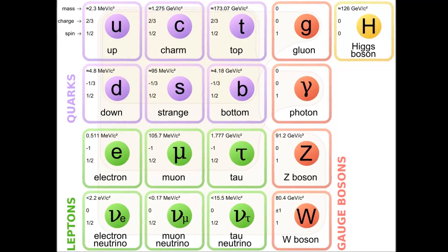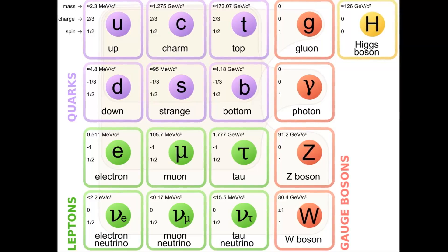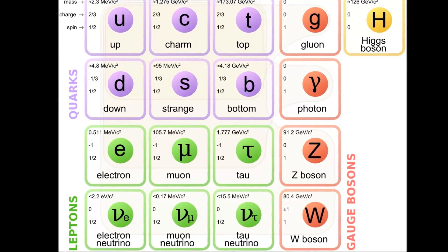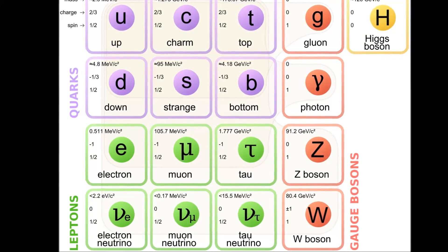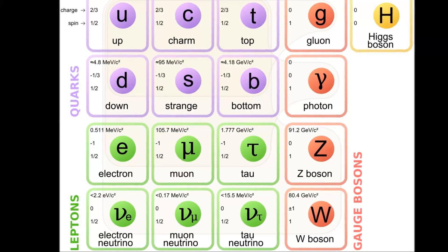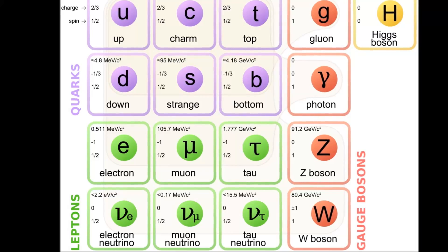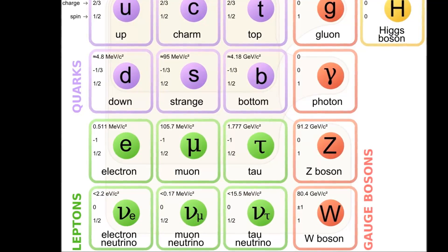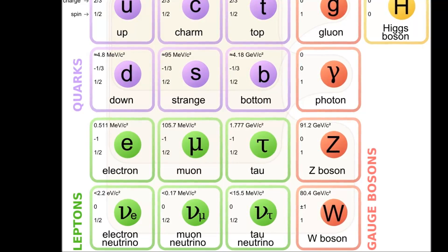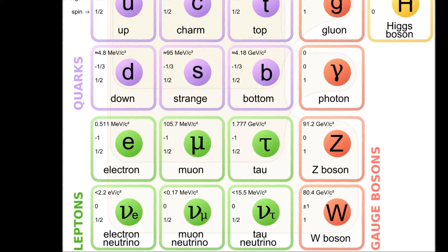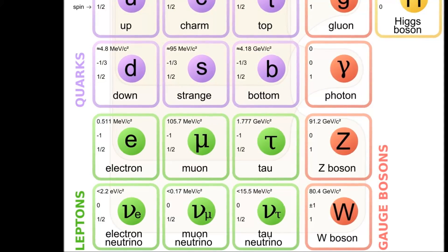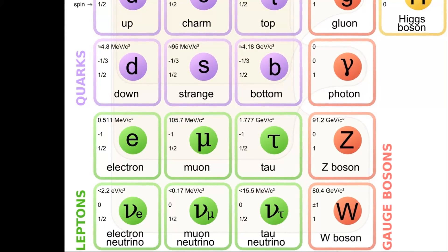Quarks are part of a larger family of fundamental particles called the standard model. The standard model is probably the most important thing that non-physics people don't know about. Quantum physics, astrophysics and cosmology are all built upon this shrine of scientific achievement. The standard model is split up into two main groups. All matter that we know of is made up of fermions and fermions can be further split into two groups: quarks and leptons.